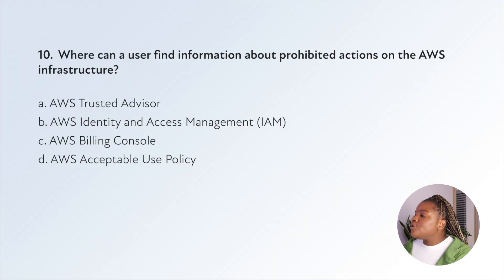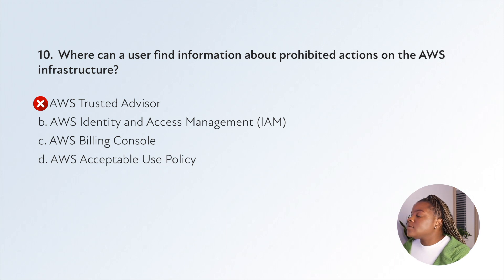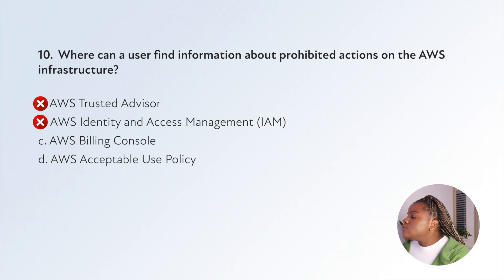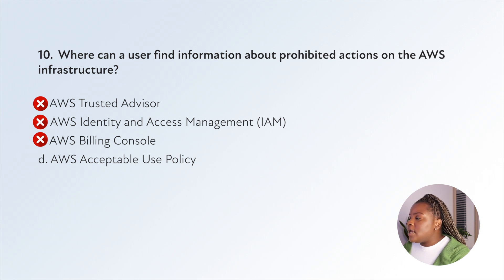Question ten: where can a user find information about prohibited actions on the AWS infrastructure? AWS Trusted Advisor is about best practices but doesn't address prohibited behavior. AWS IAM enables users to manage access to AWS services securely — it doesn't tell us about prohibited actions. The AWS Billing Console helps you manage your AWS bill — nothing to do with prohibited actions. However, the AWS Acceptable Use Policy governs the use of AWS services and its affiliated services and websites, so that is the right answer.